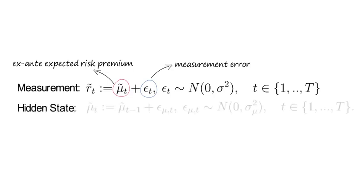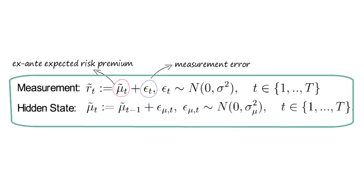We also have a state equation which we assume says that μ̃_t is simply μ̃_{t-1} plus ε_{μ,t} which is another Gaussian shock with mean zero and variance σ²_μ.